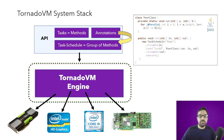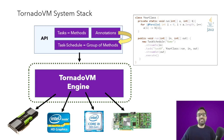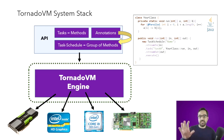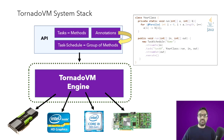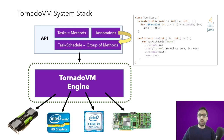TornadoVM provides tasks, and each task is a method. TornadoVM compiles at the method level — same as the JVM — translating from method level to efficient code for GPUs and FPGAs. To indicate where the parallelism is, TornadoVM provides two annotations: @Parallel and @Reduce. You can also create a group of methods — a group of tasks — that are compiled together in one compilation unit. That's what we call a task schedule.